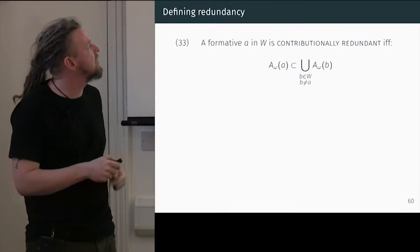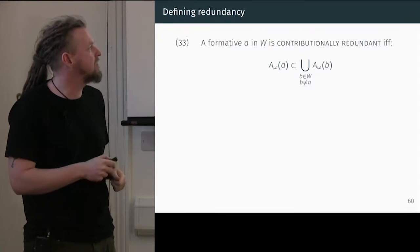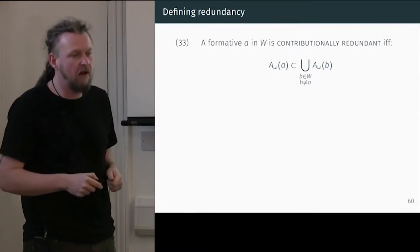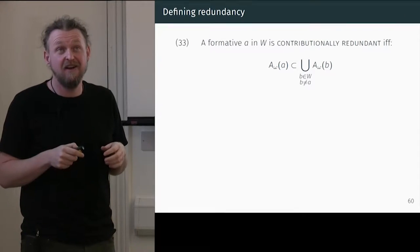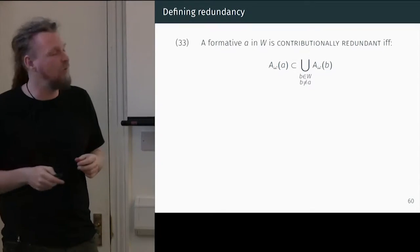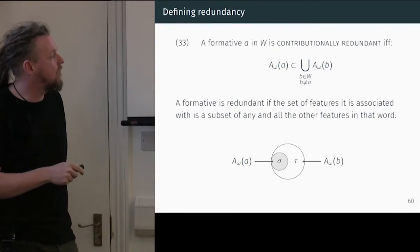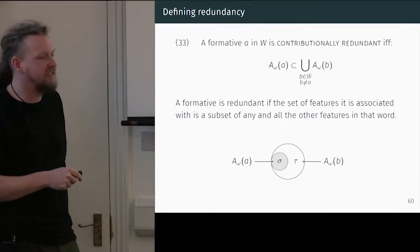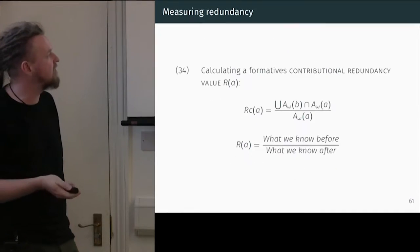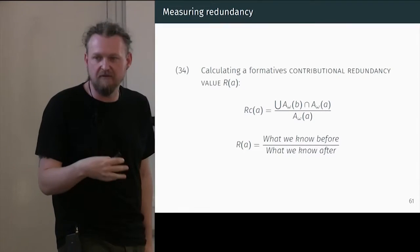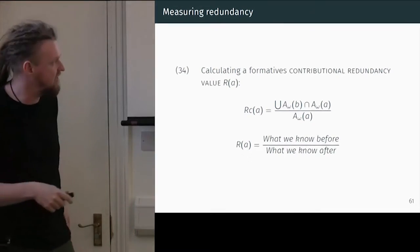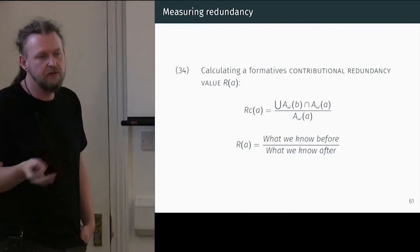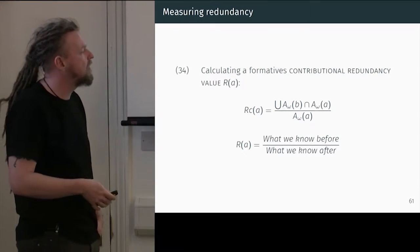Here is my definition of contributional redundancy: a formative A in a word is contributionally redundant if the set of features associated with A, given that word, is a subset of the set of features of the union of all other formatives in that word. If this one is a subset of all the features associated with all the other formatives, then it's the redundant one. We can easily turn this into a quantitative measure: simply take a ratio — redundant feature values of a formative to the actual feature values it has: what we know before over what we know after.